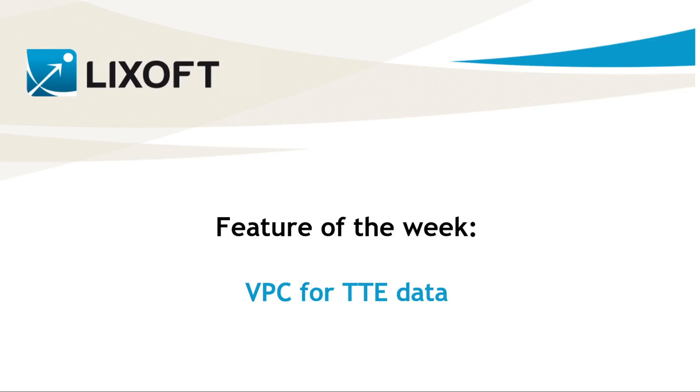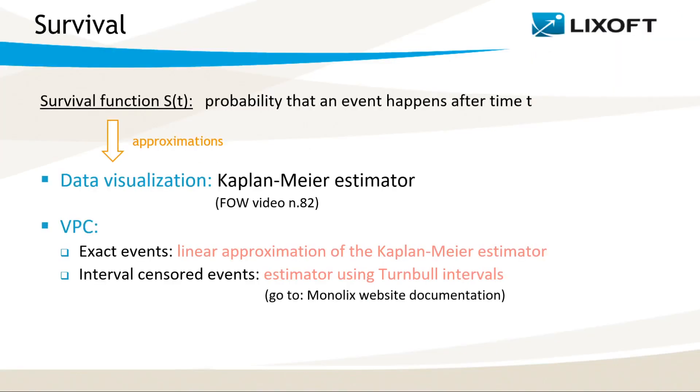In this video I will explain how Monolix generates the VPC plot for time to event data. Two weeks ago we showed you how Kaplan-Meier estimator is used to approximate the survival function. This estimator gives a step function describing how the probability to survive changes in time and it is used in the visualization of datasets in Data Explorer and in the Observed Data Plot section in Monolix.